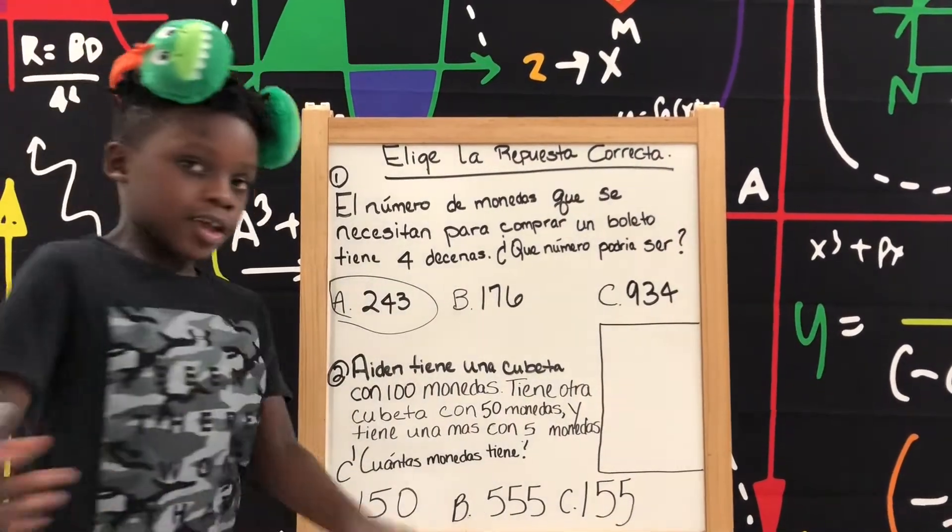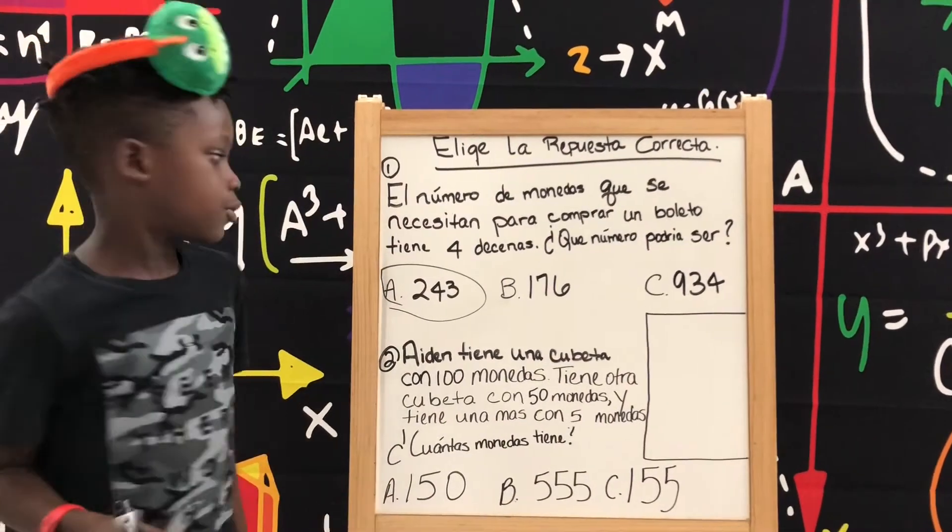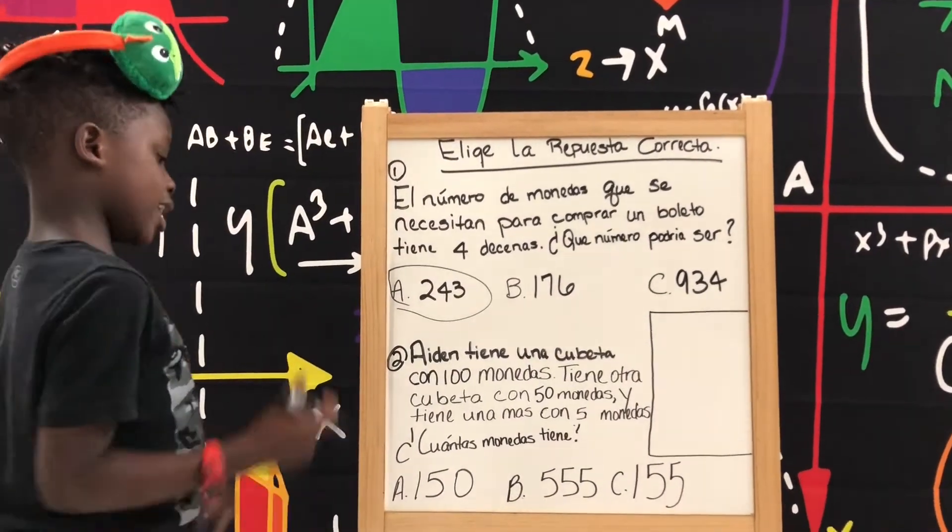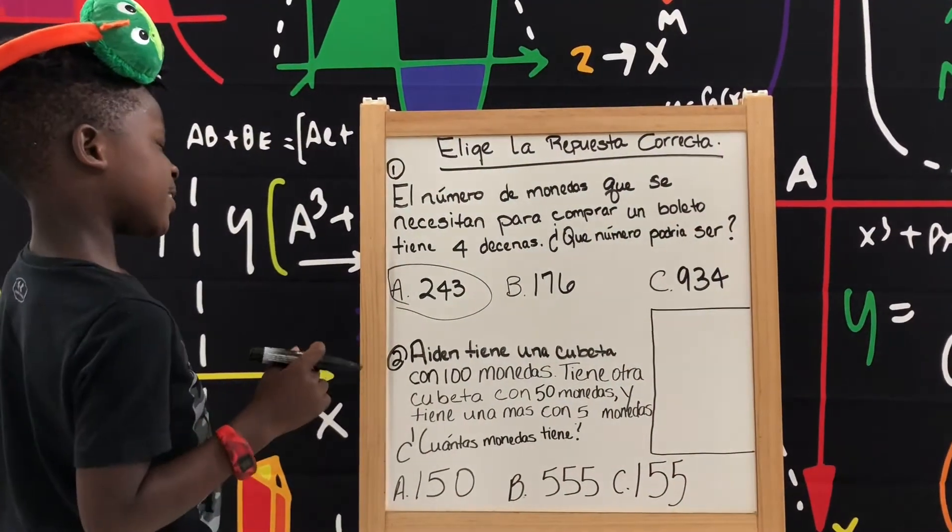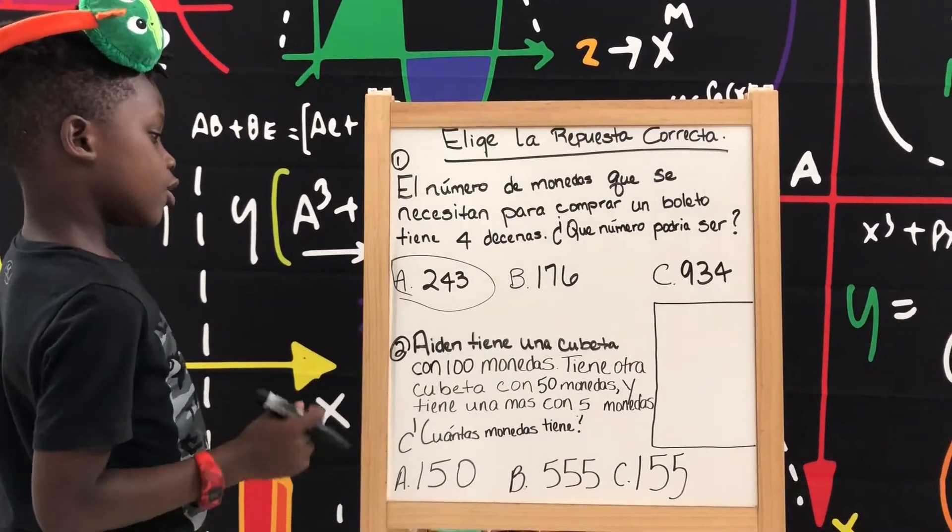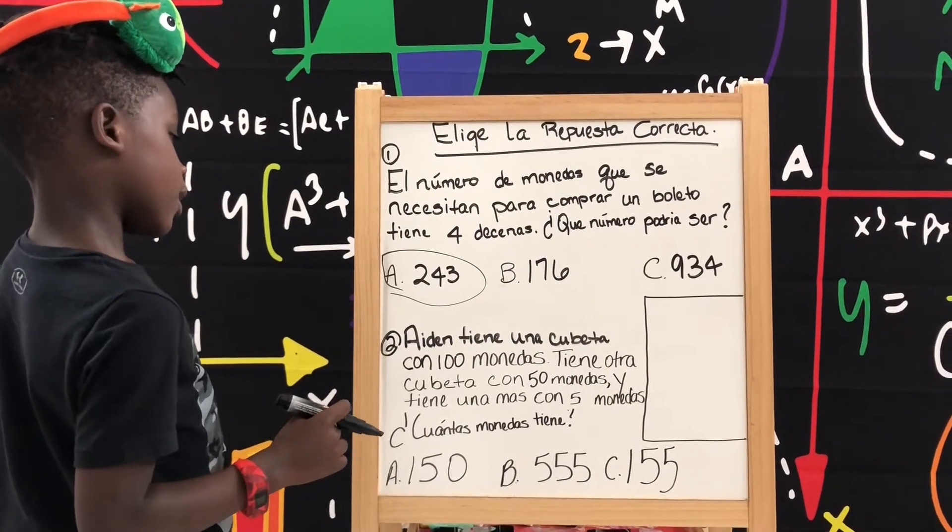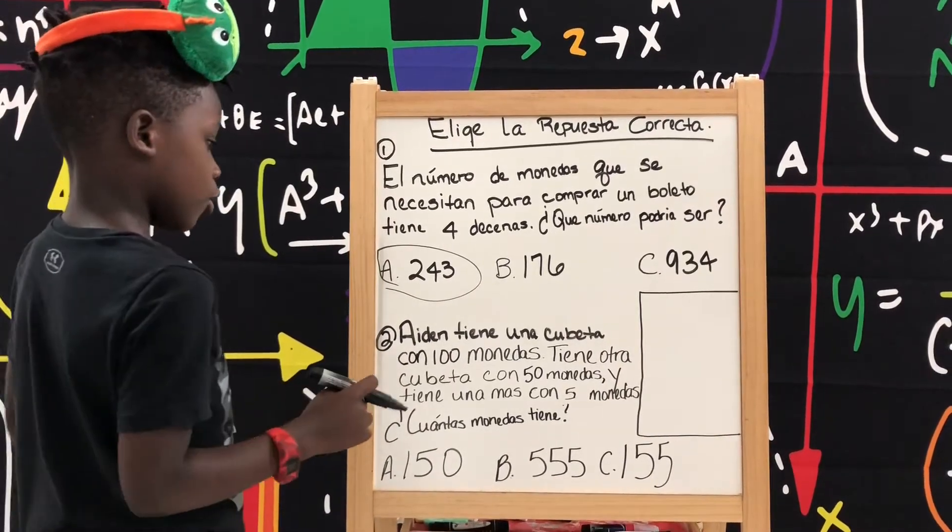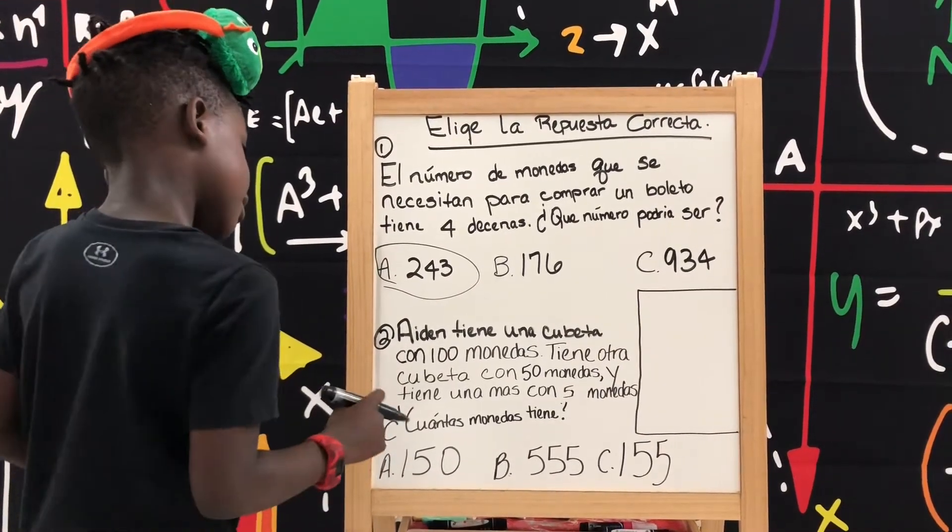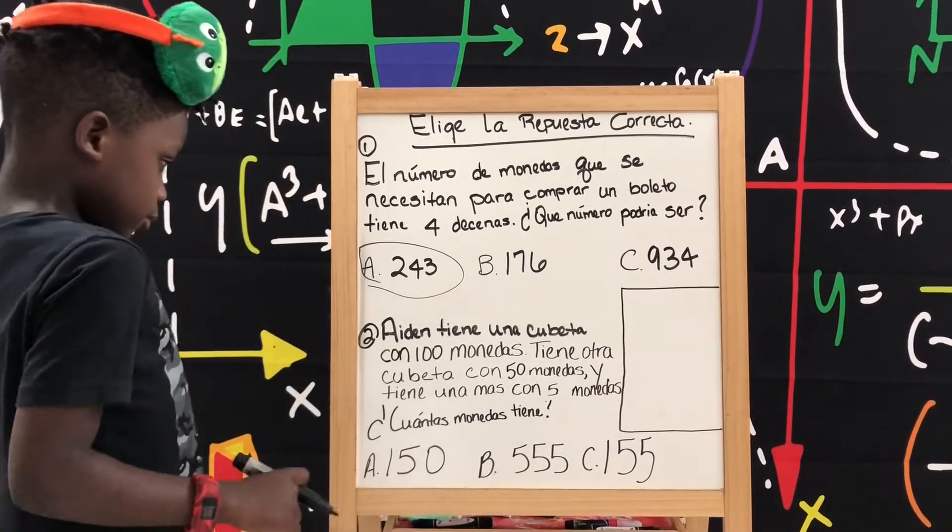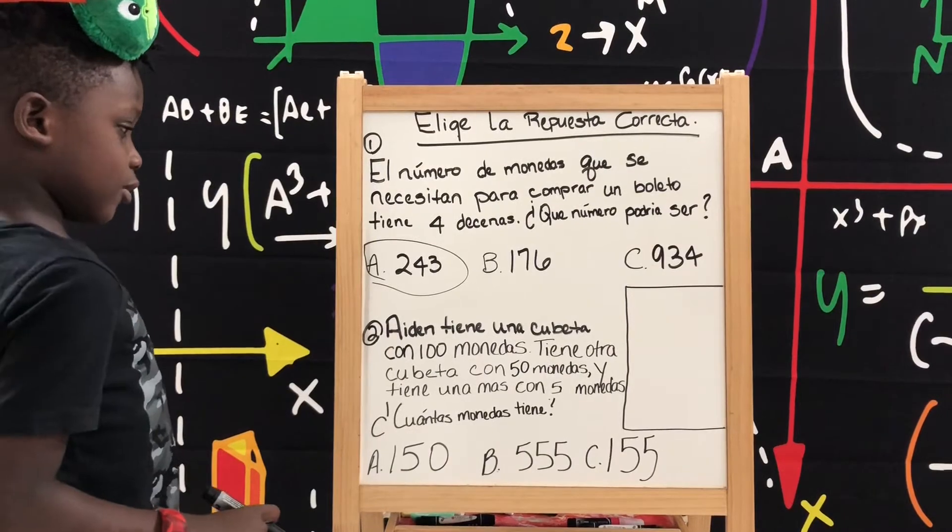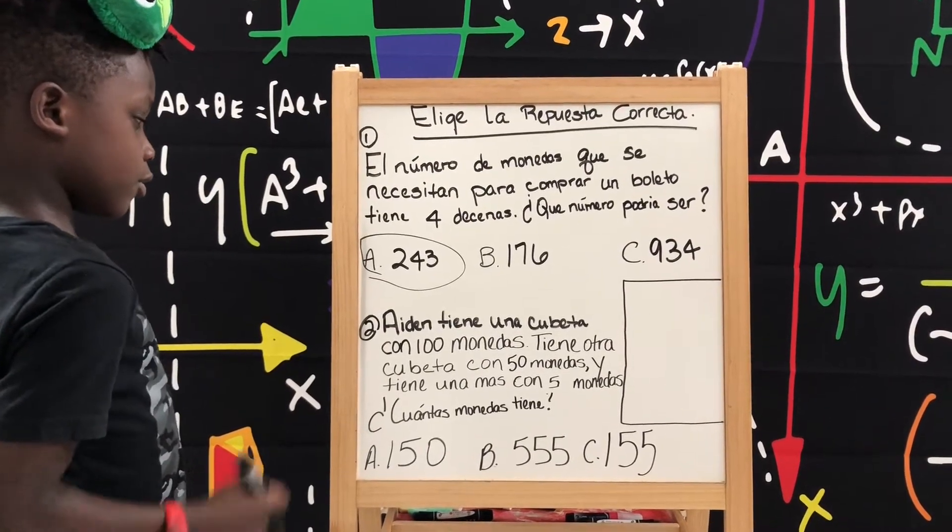Entonces, es la siguiente problema. Aiden tiene una cubeta con cien monedas. Tiene otra cubeta con cincuenta monedas. Y tiene una más con cinco monedas.